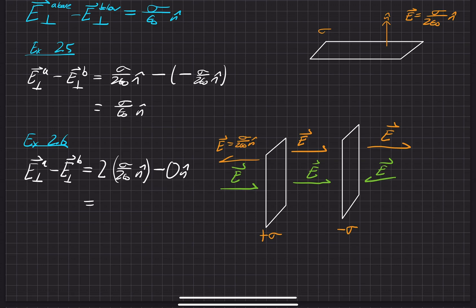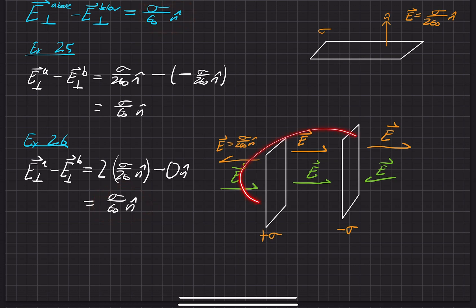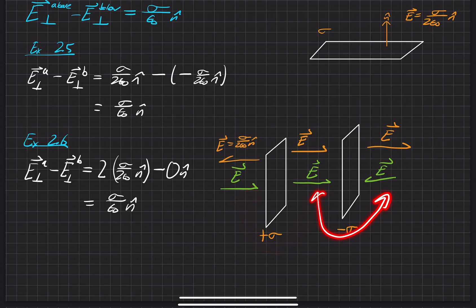The sum total ends up being the ratio of sigma to epsilon naught, which matches the boundary relationship. So even in the midst of a more complicated charge configuration with outside entities, the difference between the two sides — and this would hold for either side — is equal to the same boundary condition value.